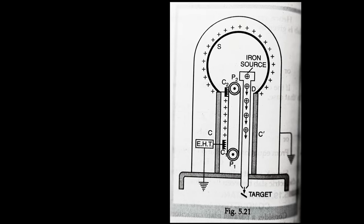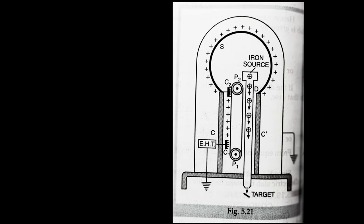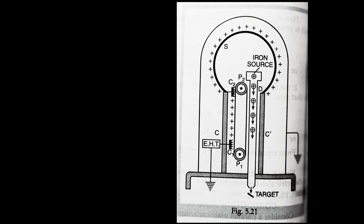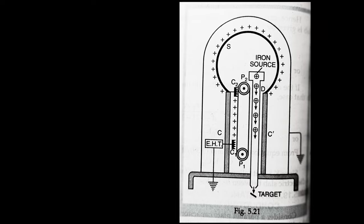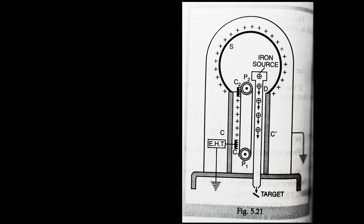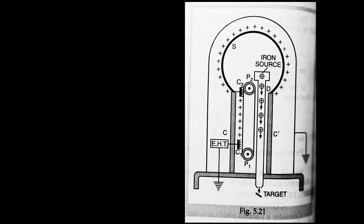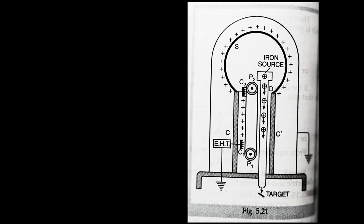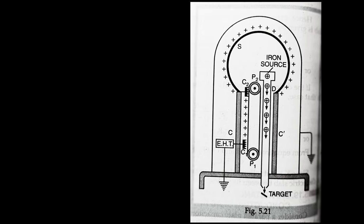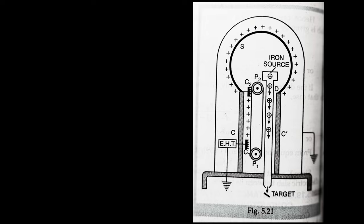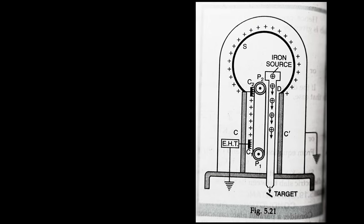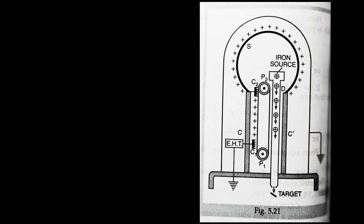If projectiles such as protons, deuterons, etc. are generated in the discharge tube D with lower end earthed and upper end inside the hollow sphere, they get accelerated in a downward direction along the length of the tube. At the other end, they hit the target with large kinetic energy and bring about nuclear disintegration.